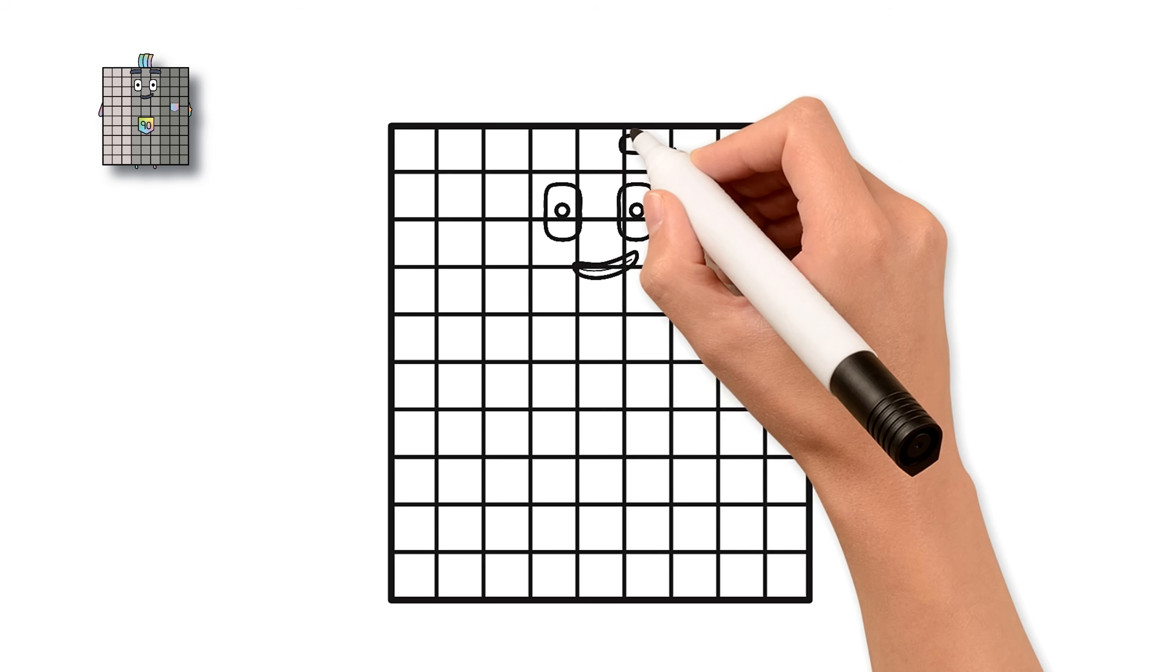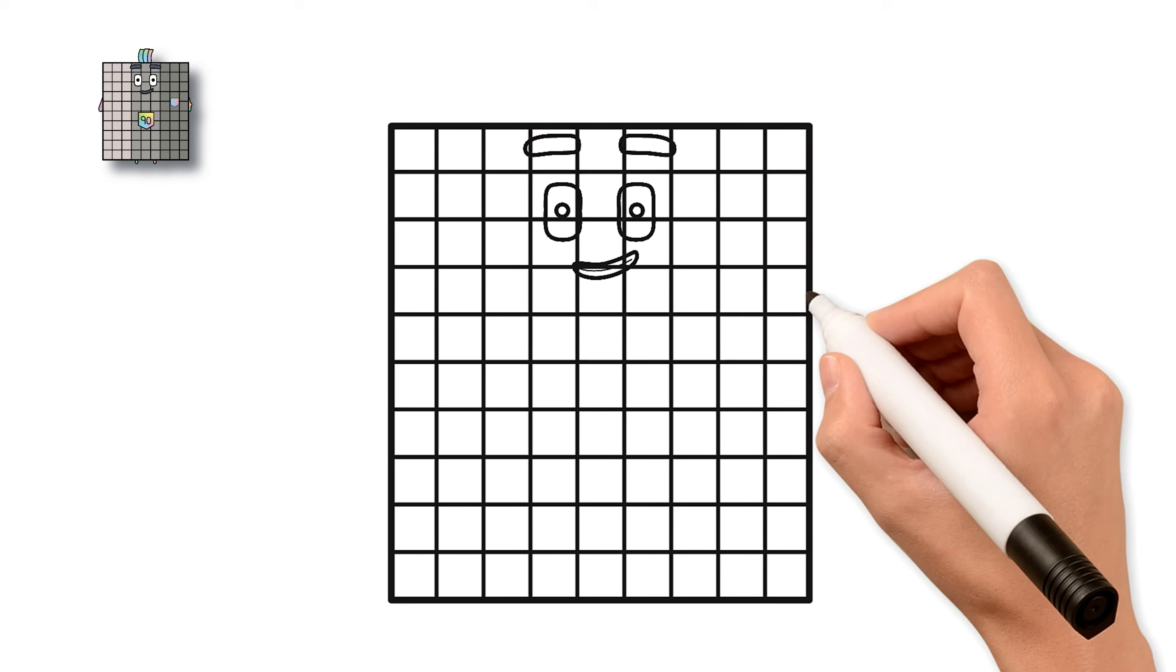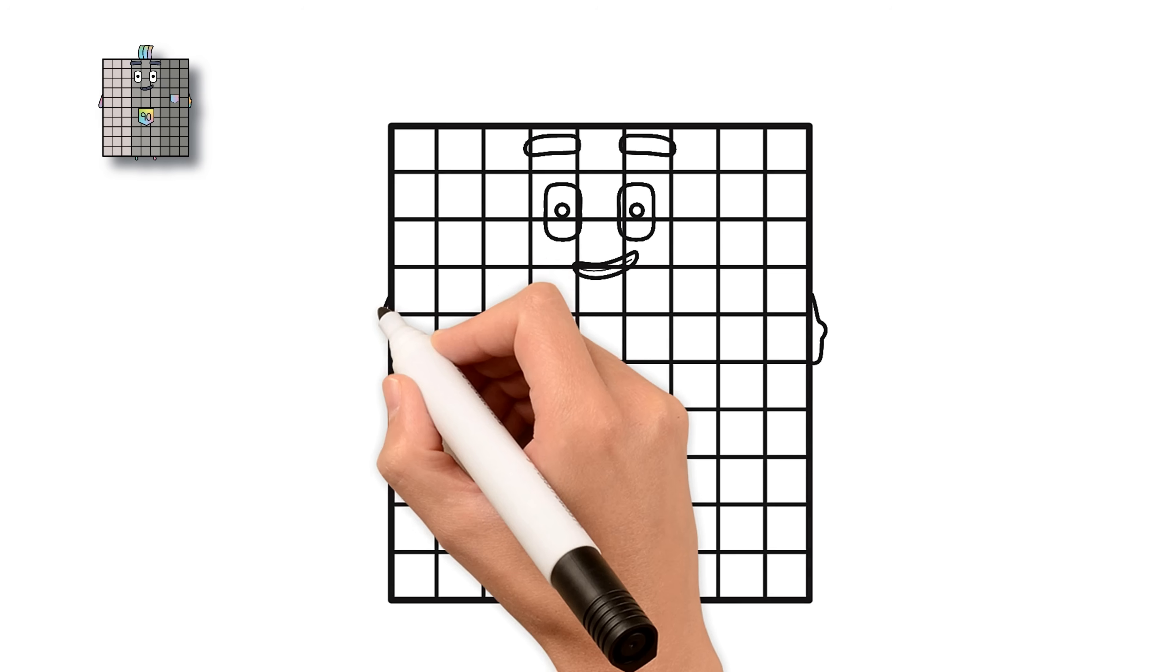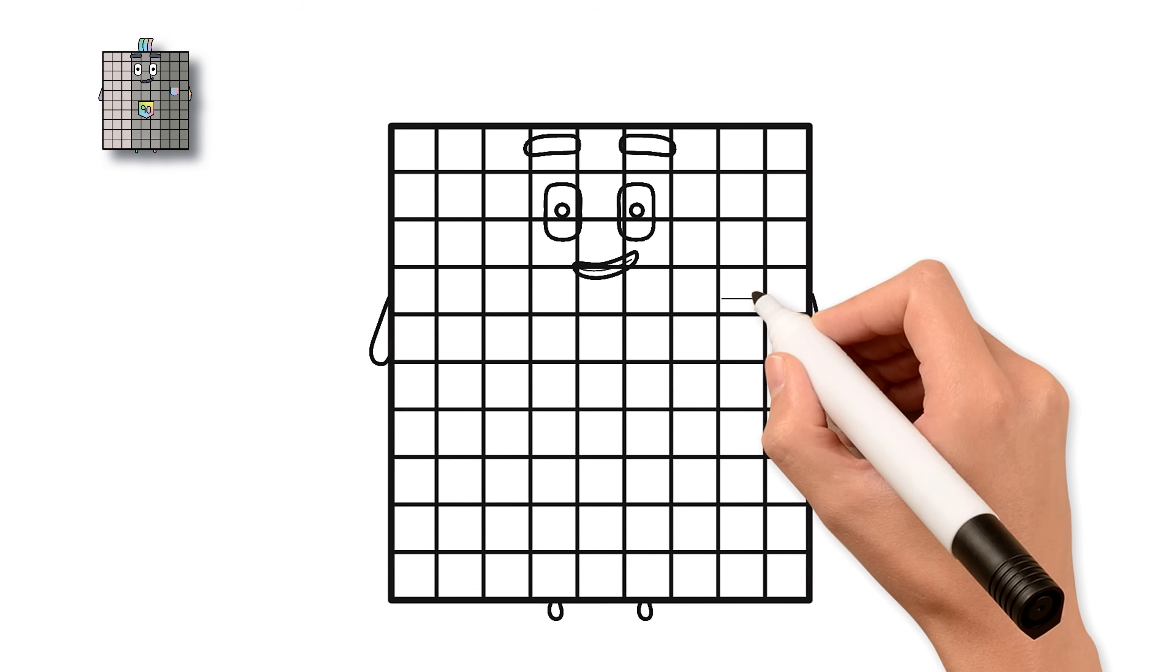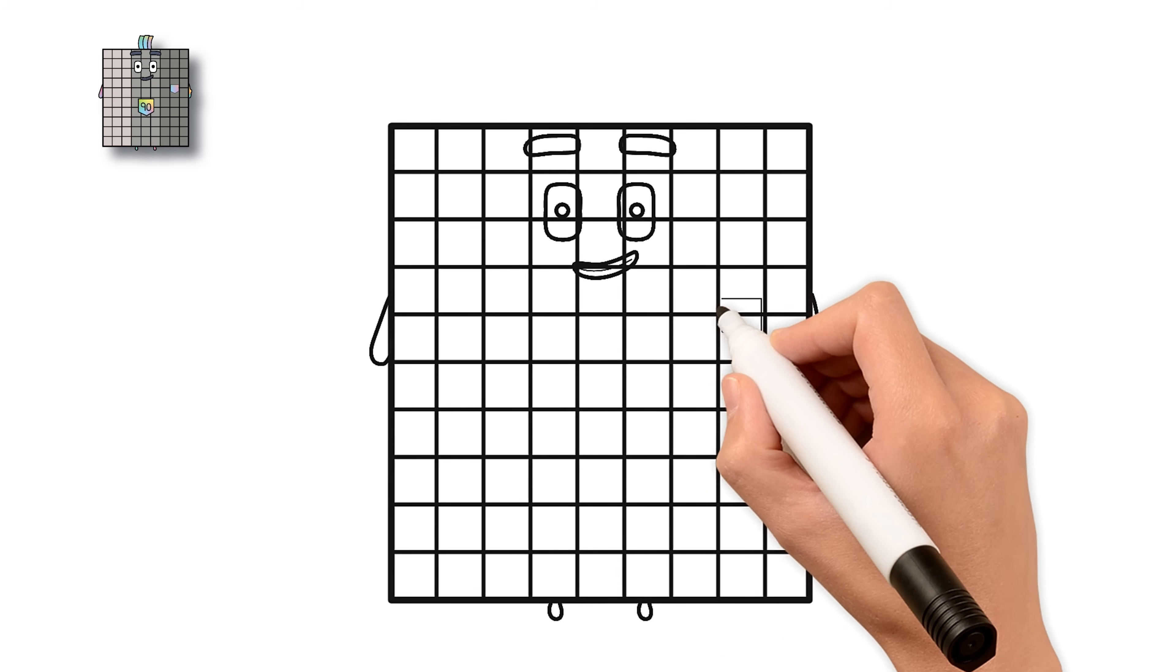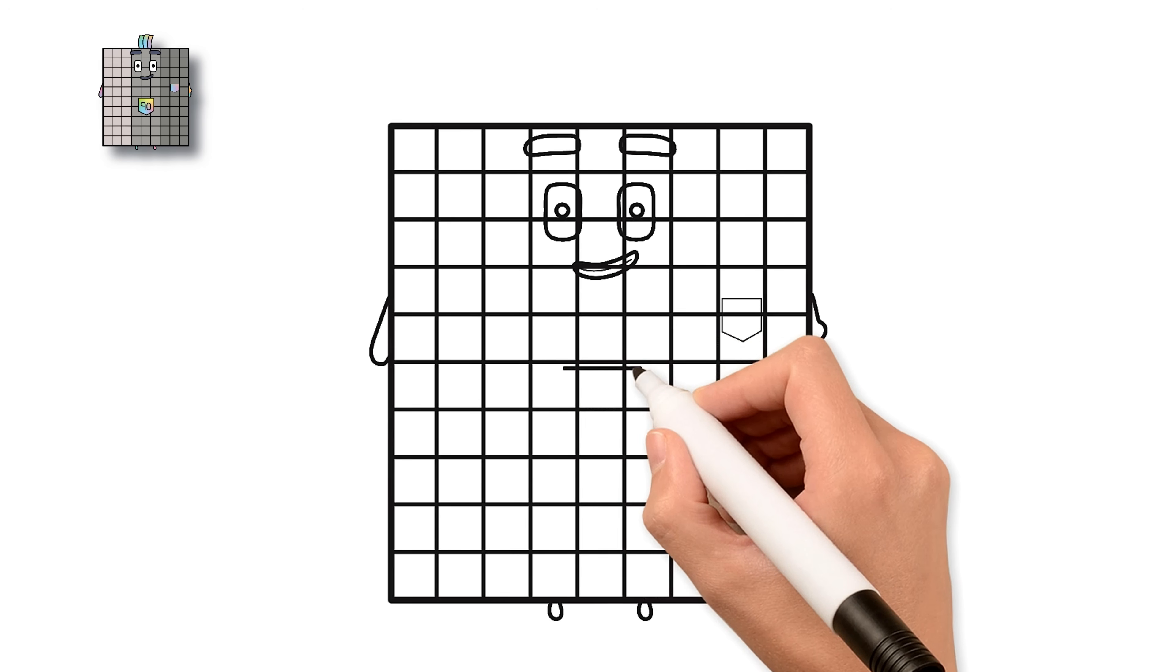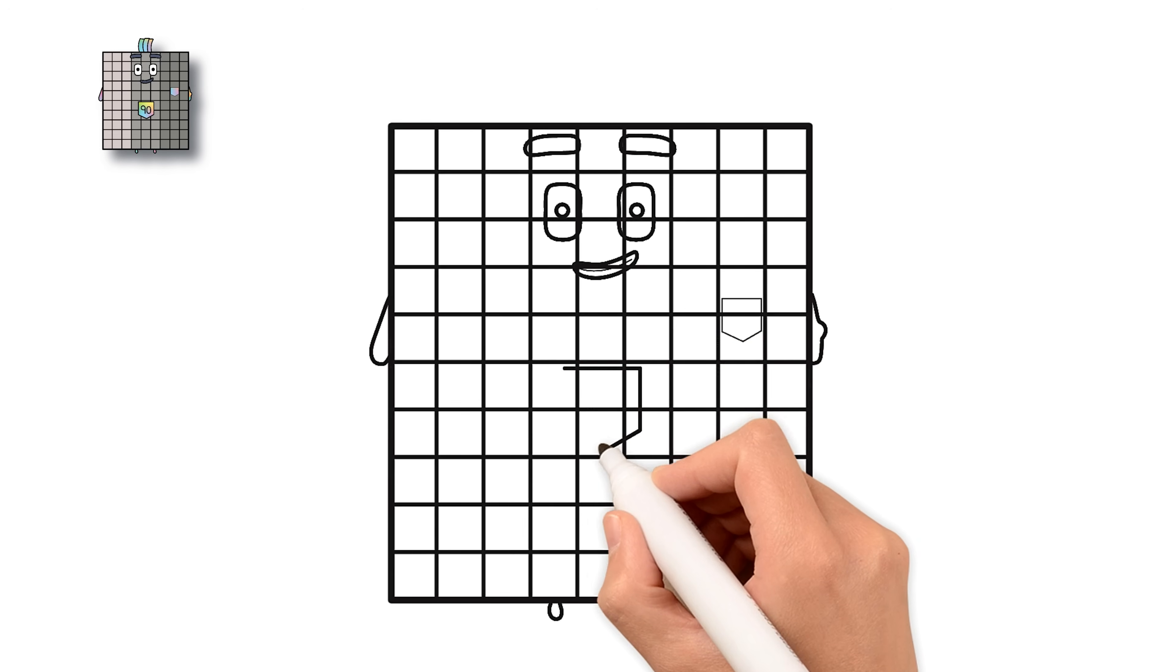That's our number block 90. Draw short arms peeking out from the middle rows. Add two short legs and add a tiny pocket on the side. Now draw a little number badge in the center of his tummy with the number 90 written on it. Great job!